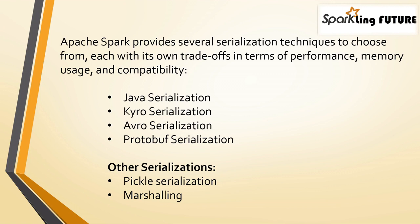Java serialization is the default serialization mechanism in Java. While it's easy to use, it can be slower and produce larger serialized data due to its extensive metadata, so it might not be the most perfect choice for Spark applications. Similarly in Scala, by default it uses Java serialization when working with serialization formats like RDDs and DataFrames when transferring data over the network.